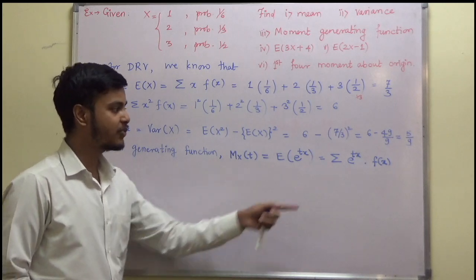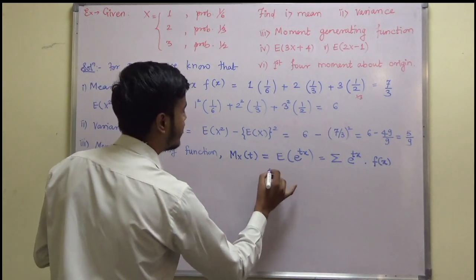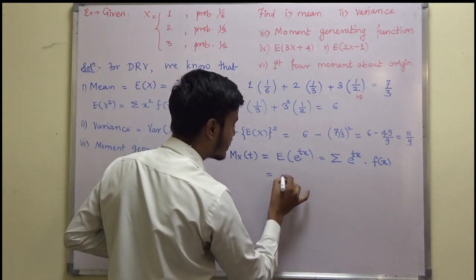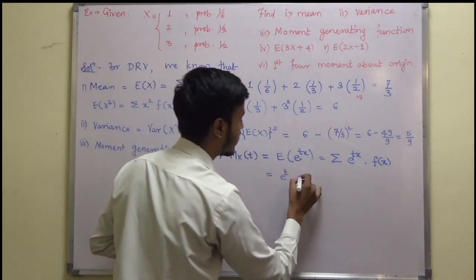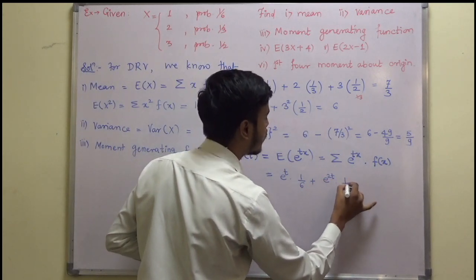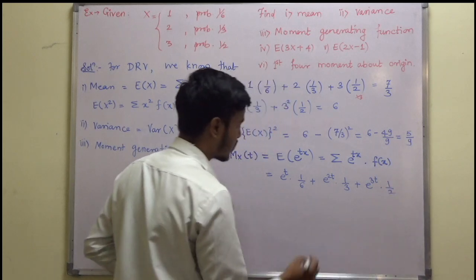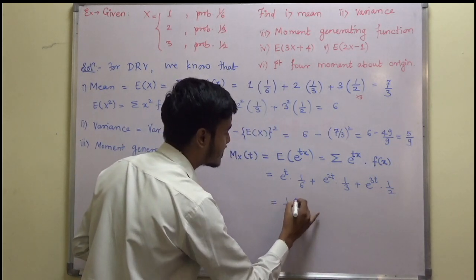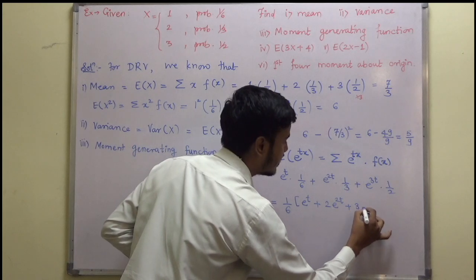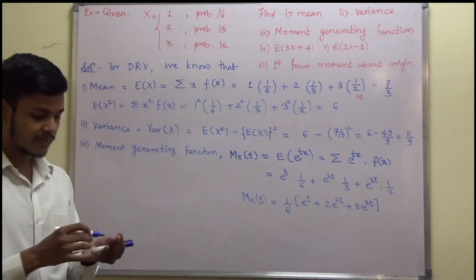Substituting the values: put x=1, f(x)=1/6; then x=2, f(x)=1/3; then x=3, f(x)=1/2. Taking LCM, we get M_X(t) = (1/6)[e^t + 2e^(2t) + 3e^(3t)]. So this is my moment generating function M_X(t).